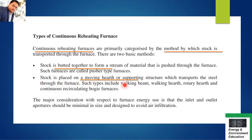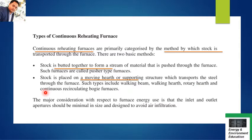The key difference between the two types: in the pusher type, the hearth is fixed and the stock moves through the furnace. In the moving hearth type, it is the hearth itself - the supporting structure on which the stock is placed - that moves and transports the steel through the furnace. This second category includes the walking beam, walking hearth, rotary hearth, and continuous recirculating boggy furnaces. I will explain all these types in the coming slides.